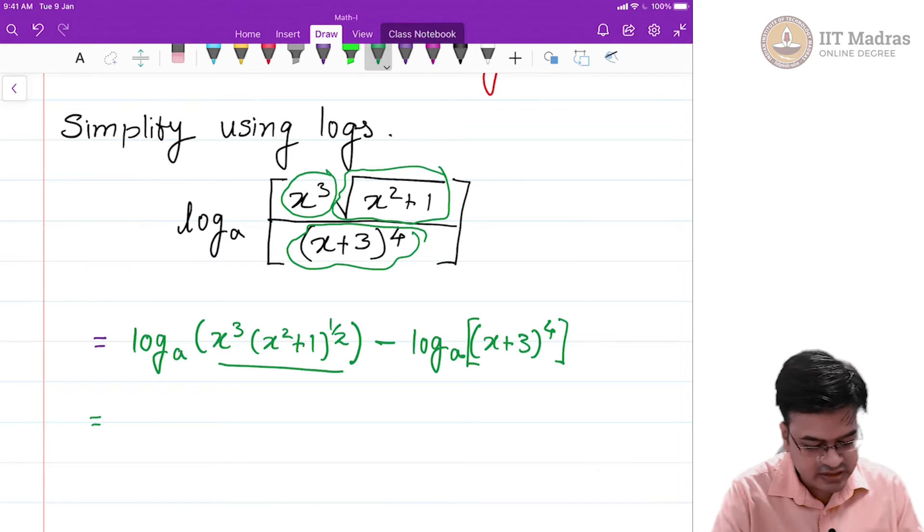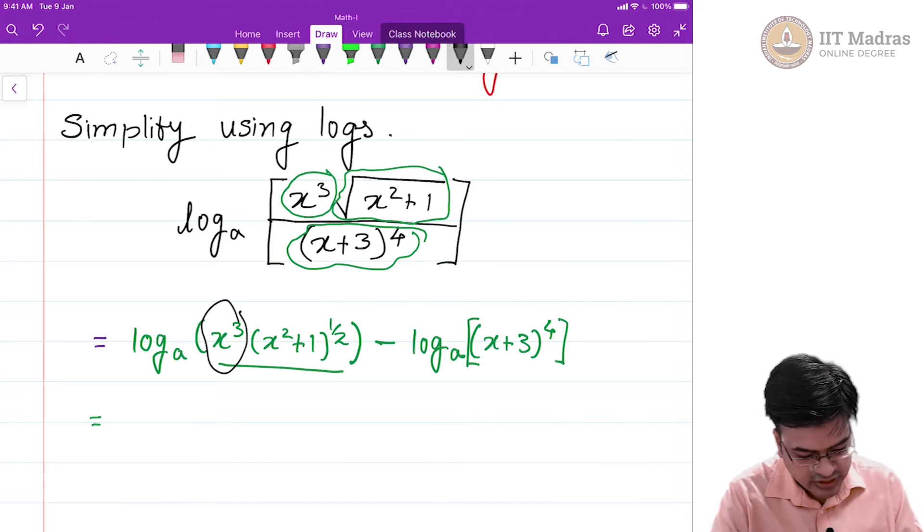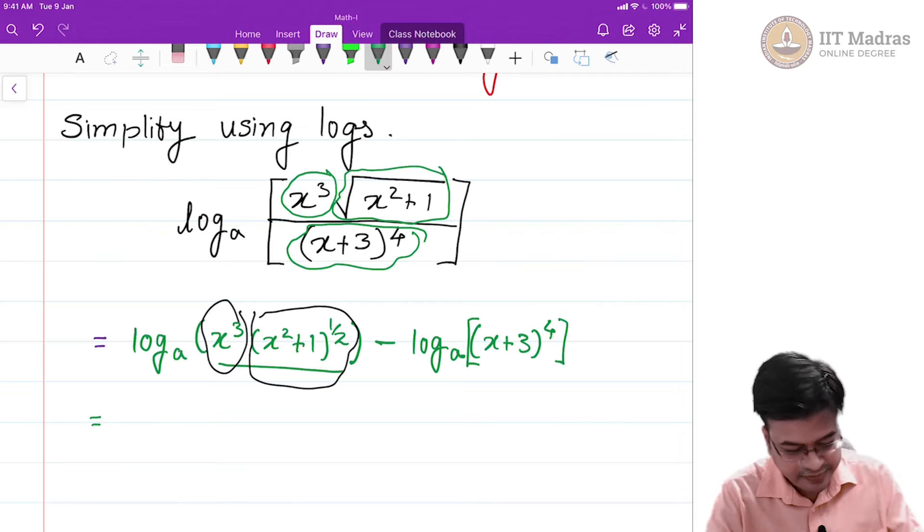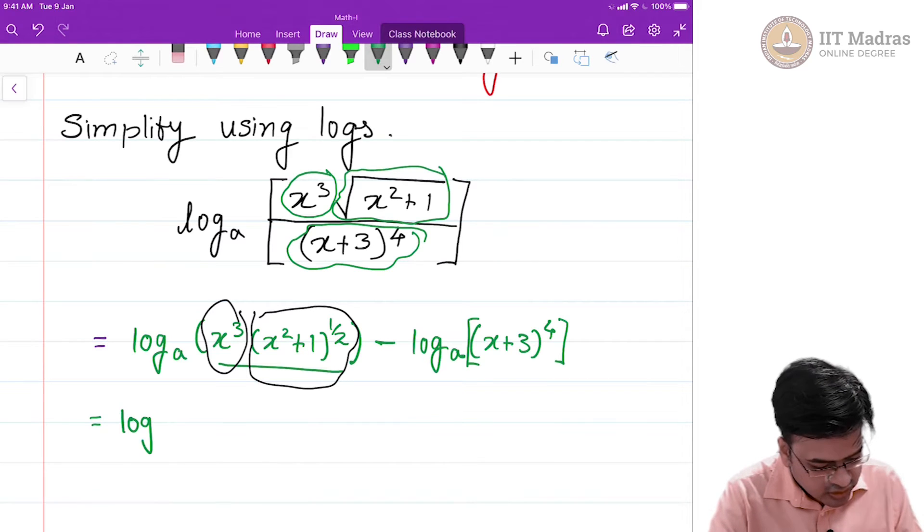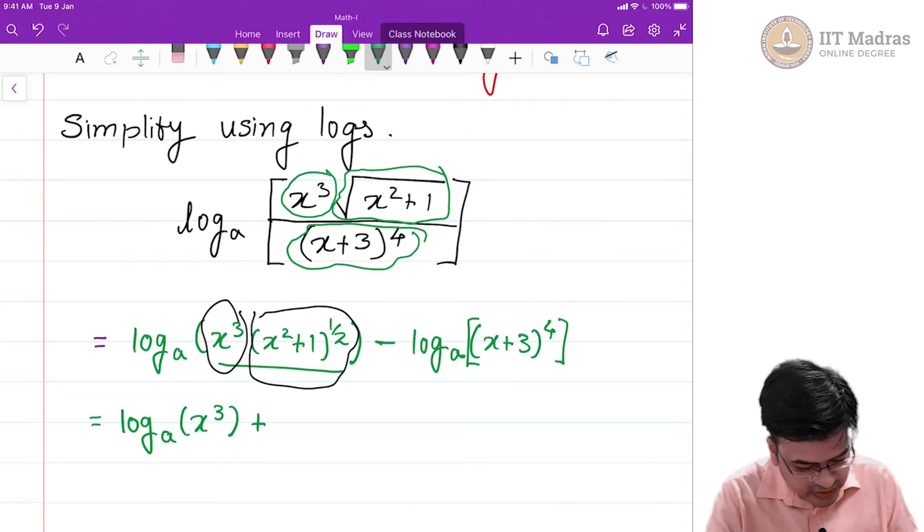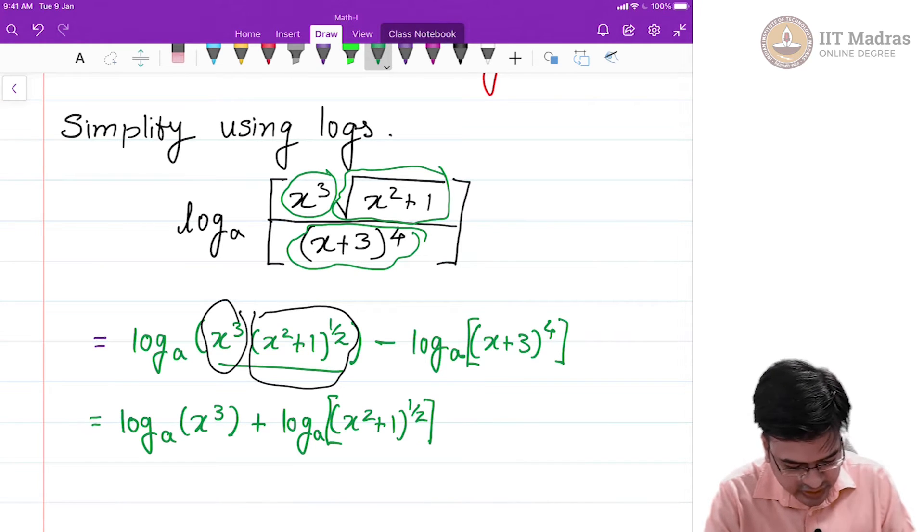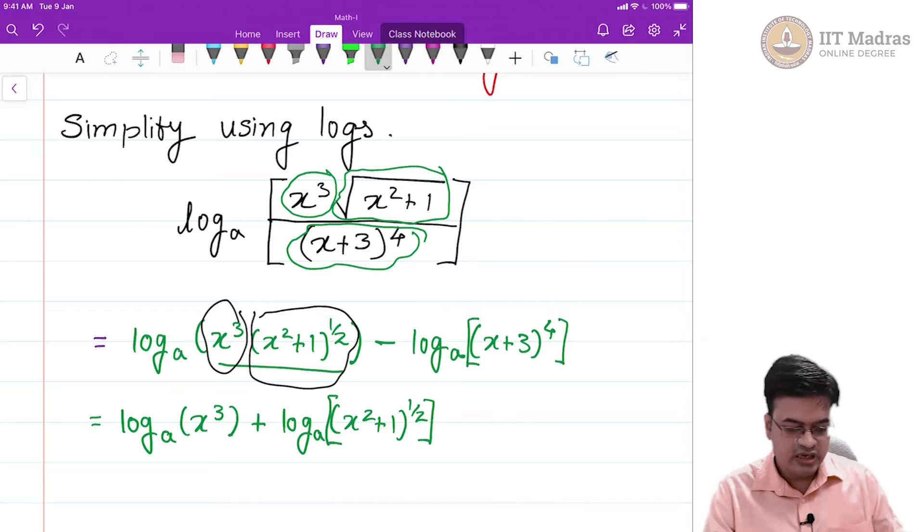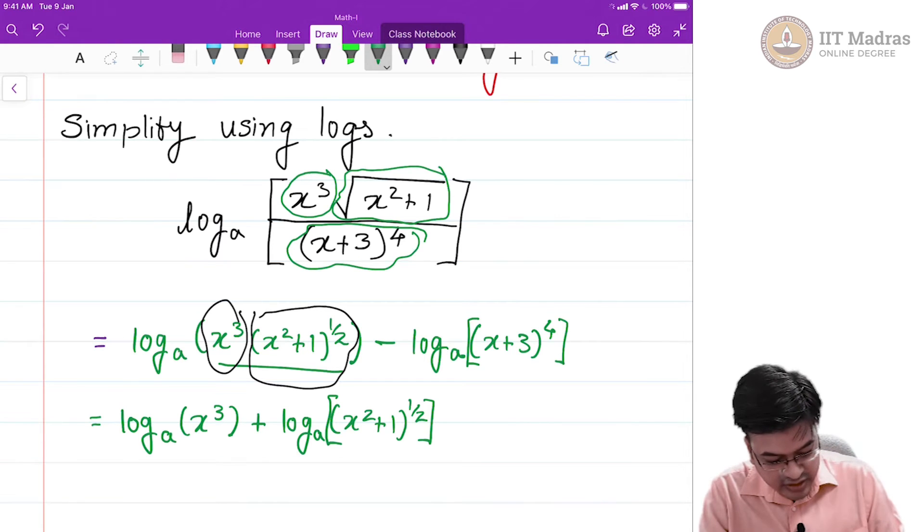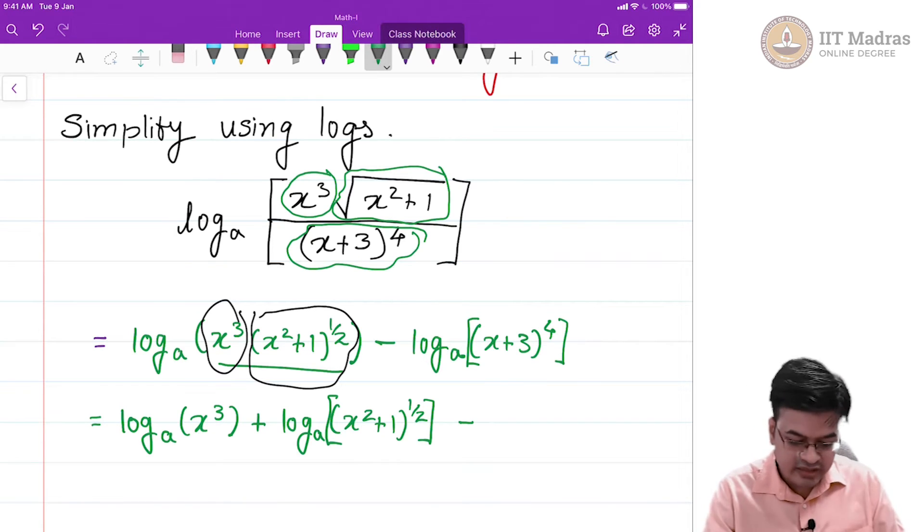Now you can see these terms can be characterized into 2 terms, this is the first term and this is the second term. I can write this particular thing as log to the base a of x cube plus log to the base a of x square plus 1 the whole raise to half. To identify the raise to half is inside the log I have put it this way, then minus you look at this term again.